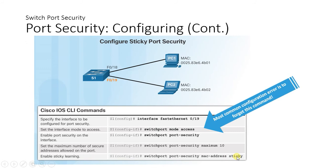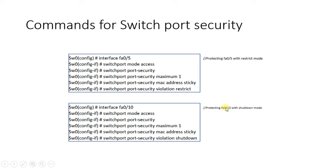MAC address sticky will automatically remember all connected MAC addresses. The first machine connected will have its MAC address remembered — that's count one. The second machine's MAC address is also remembered, and so on up to 10. The 11th machine will not be allowed to access the network. If you want to allow only one PC, set the maximum count to one. These are the commands for switch port security.